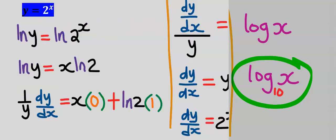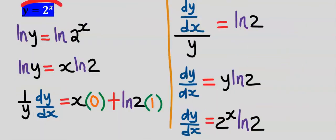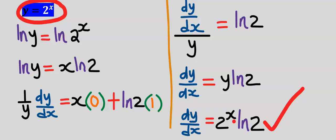Subsequently, when you differentiate a constant raised to the power of X, you are going to have that constant raised to the power of X multiplied by the natural log of that constant, without the X.